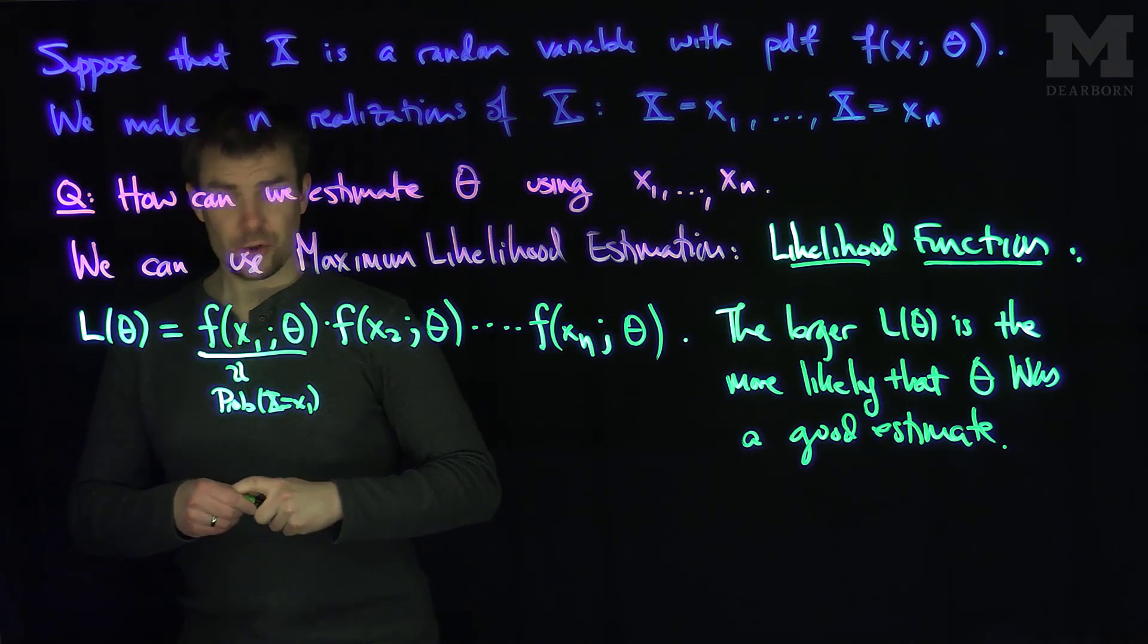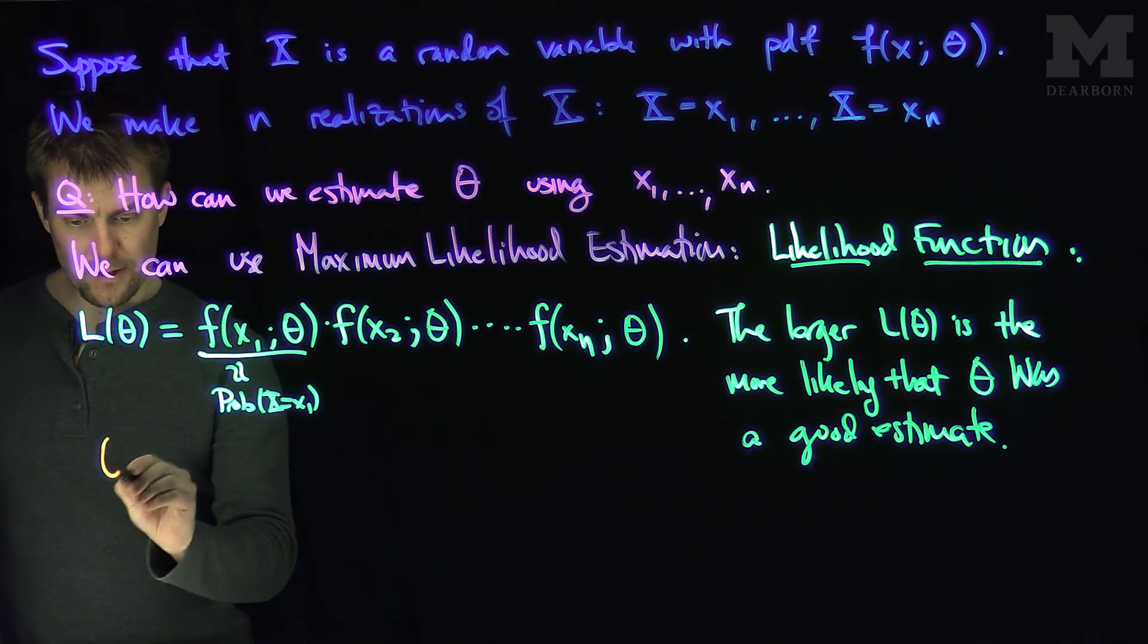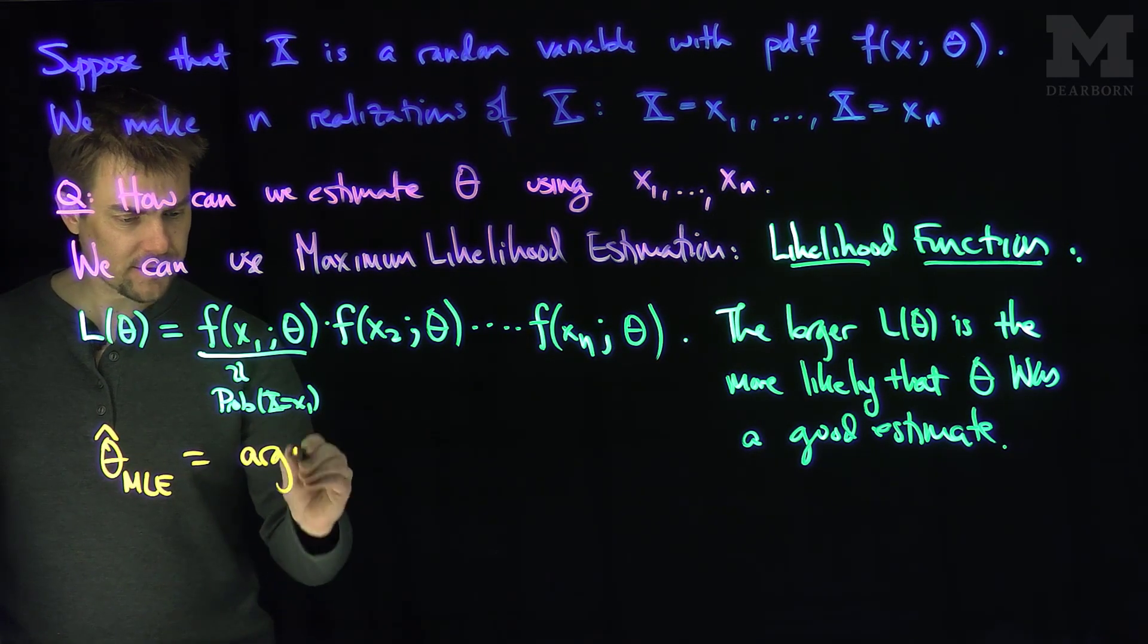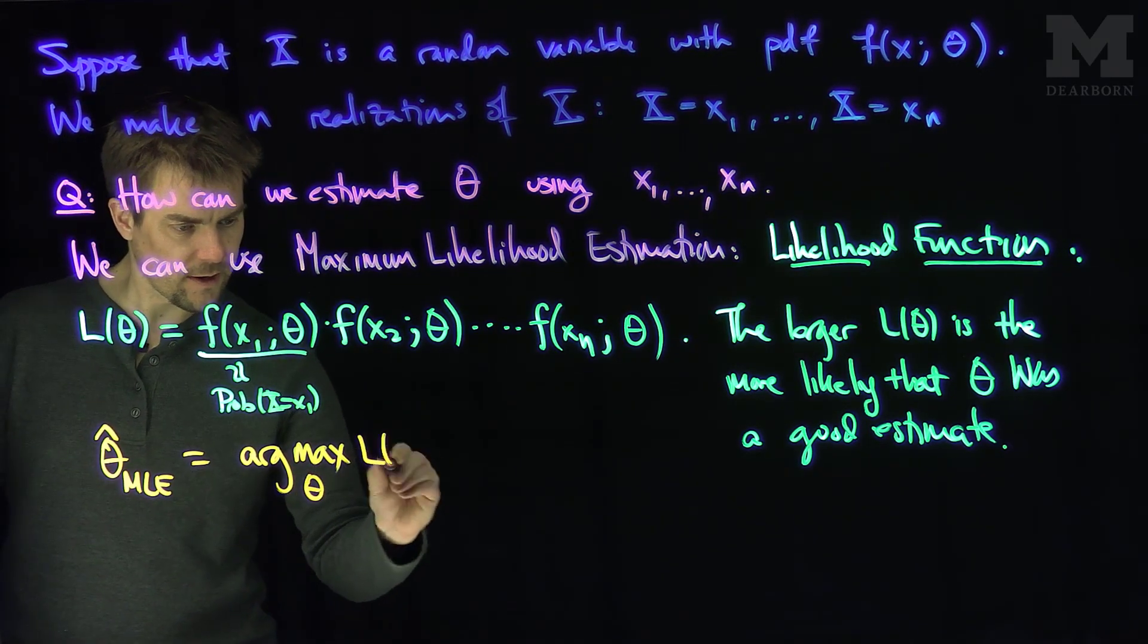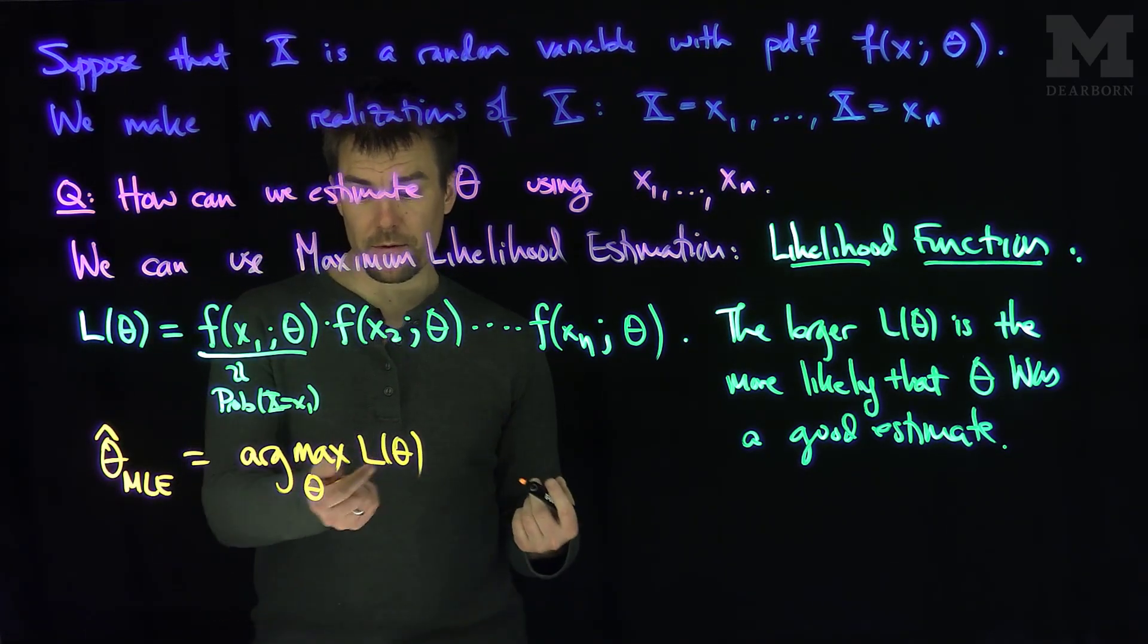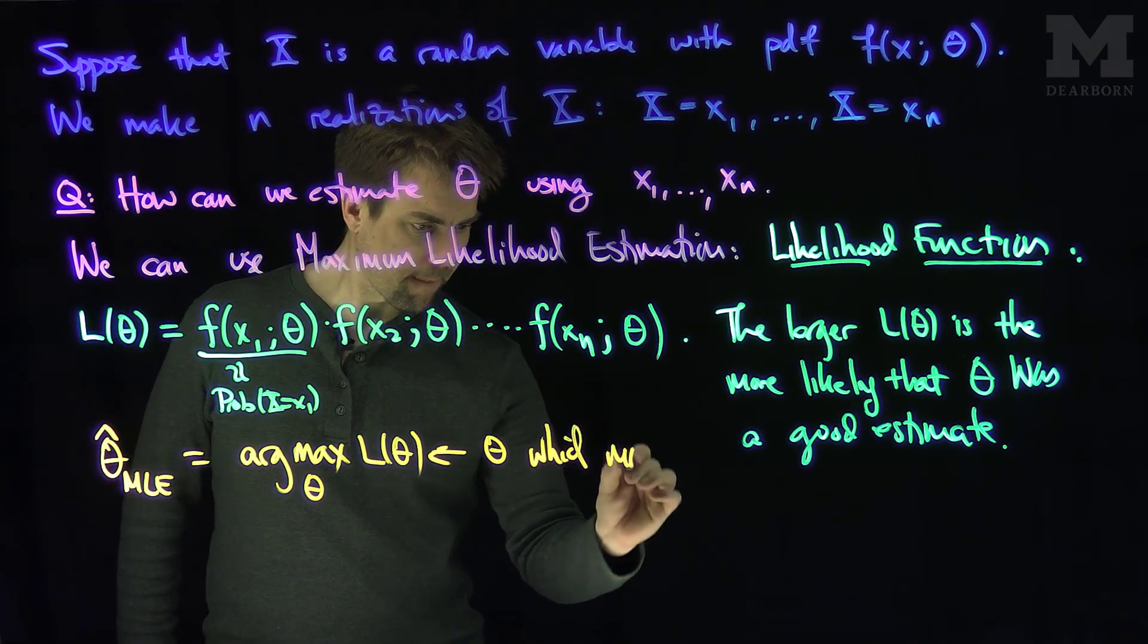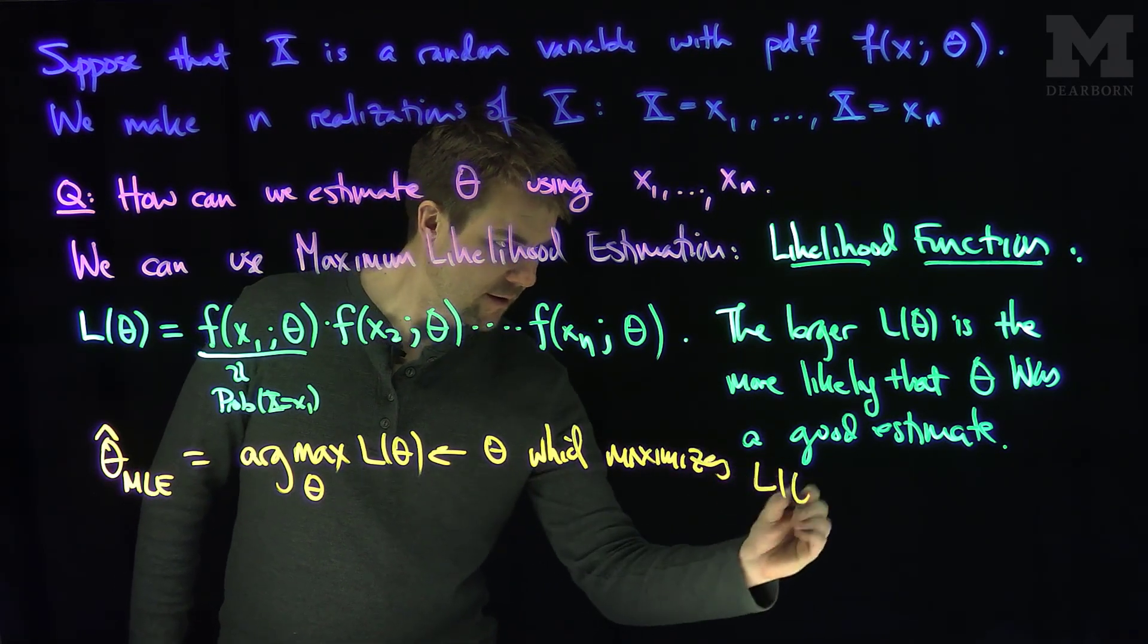My goal is to find the theta that maximizes this. So theta MLE, the estimate for the parameter theta, is the argmax over all theta of L(θ). This argmax notation means find the theta which maximizes L(θ).